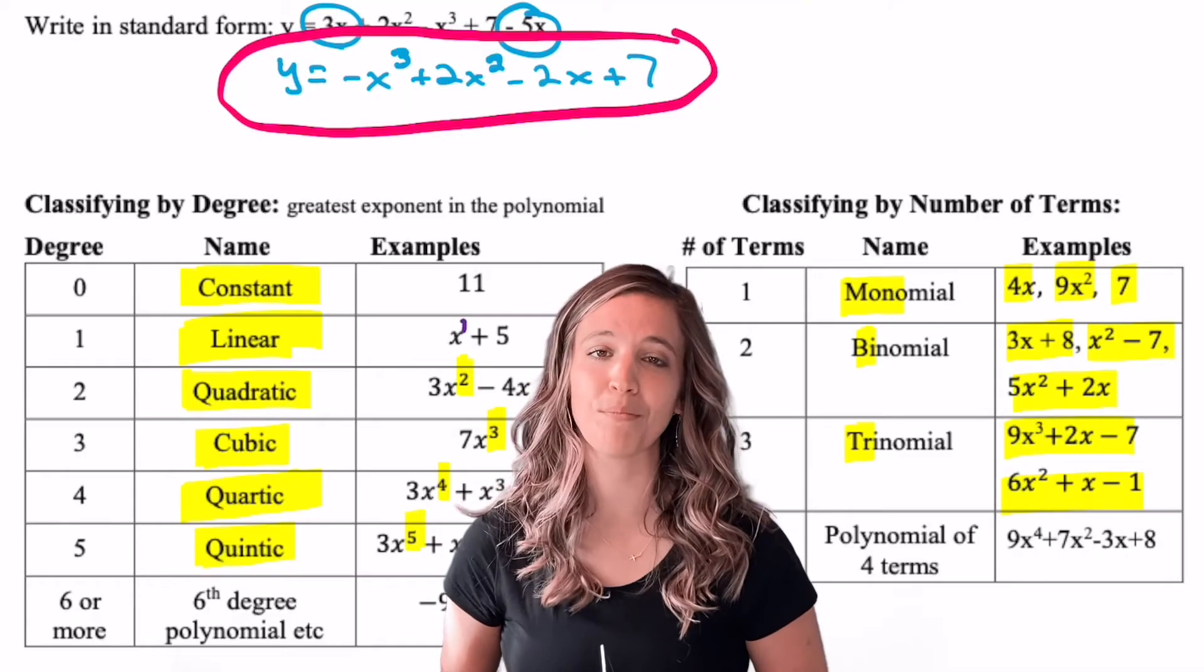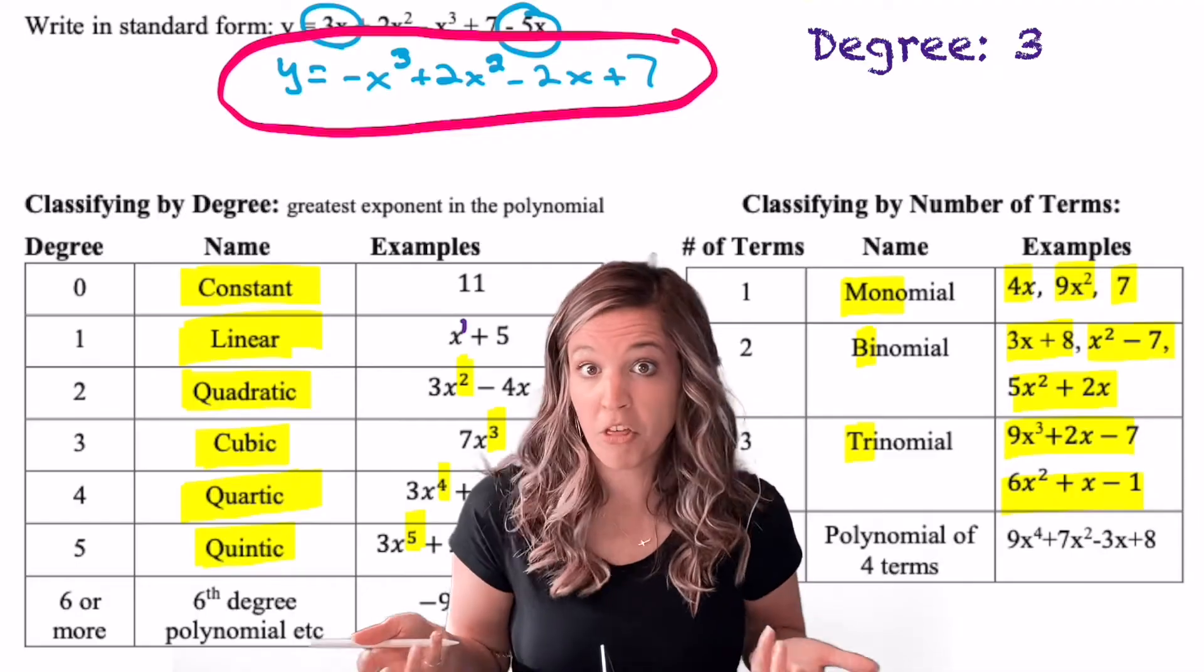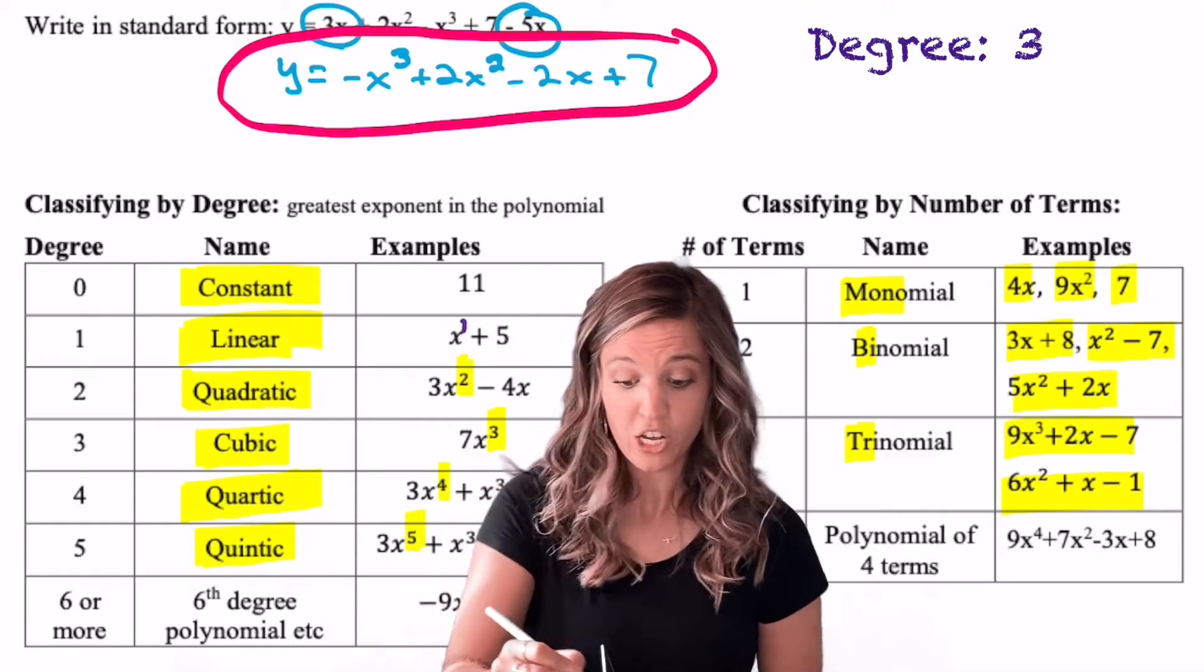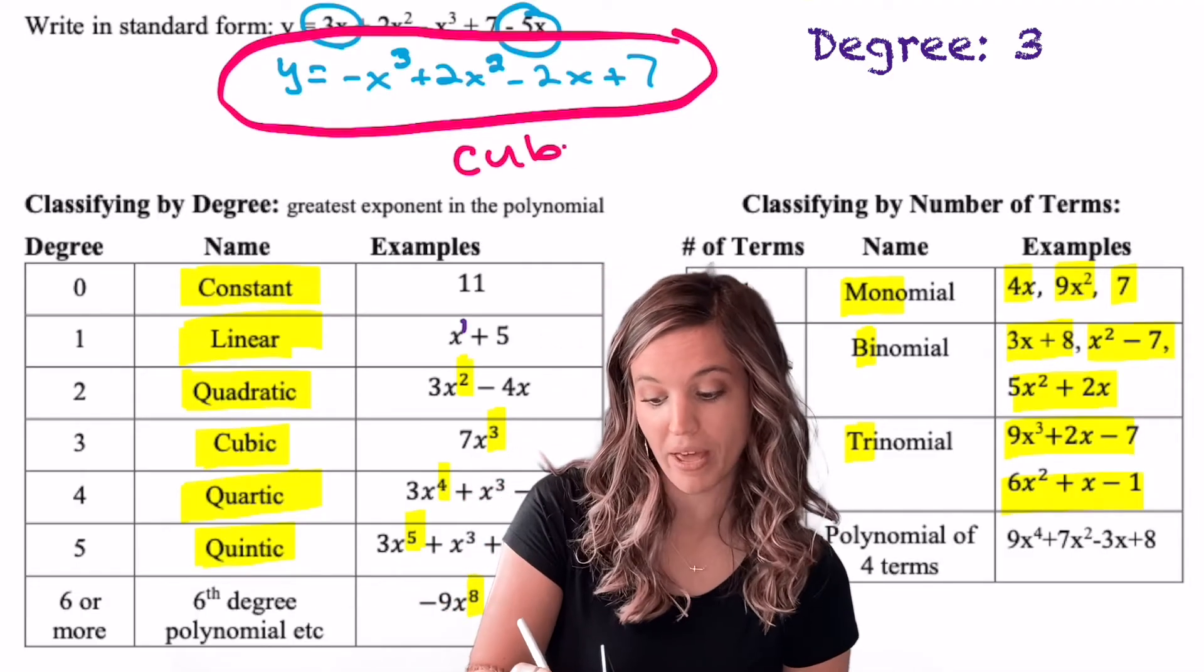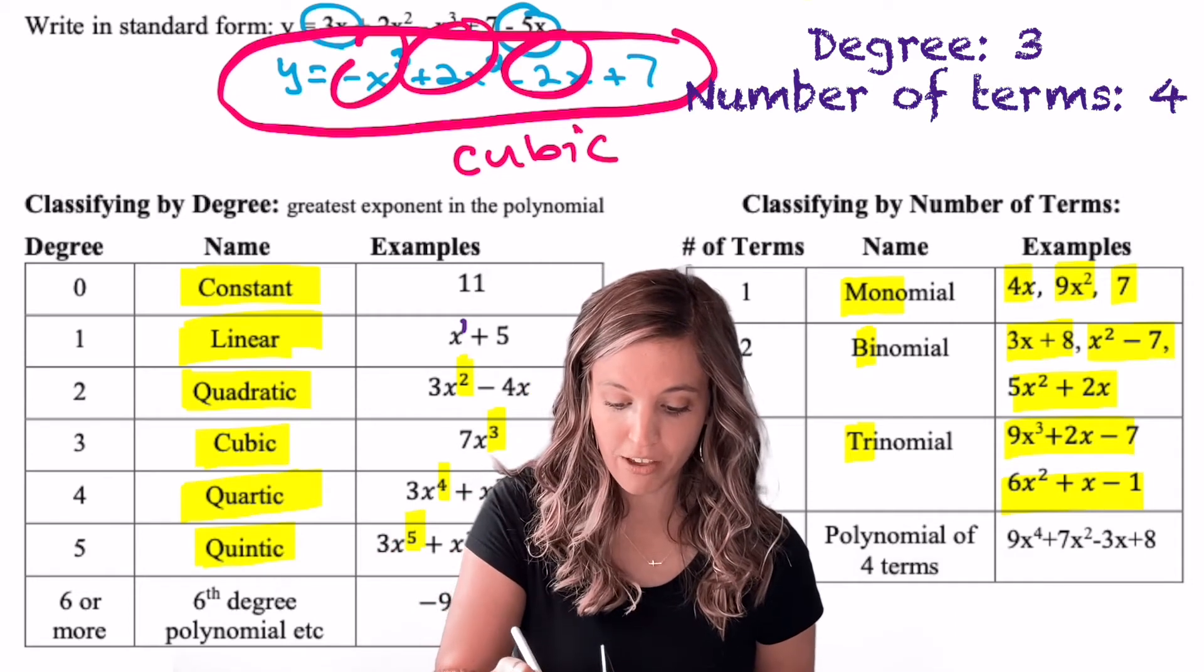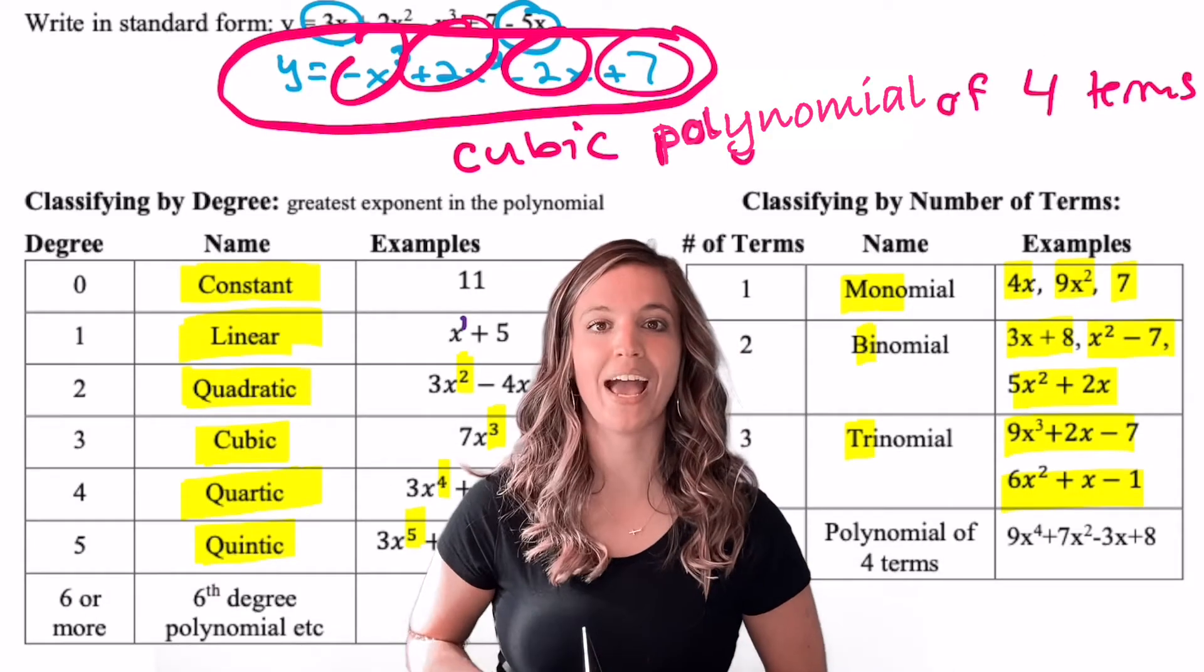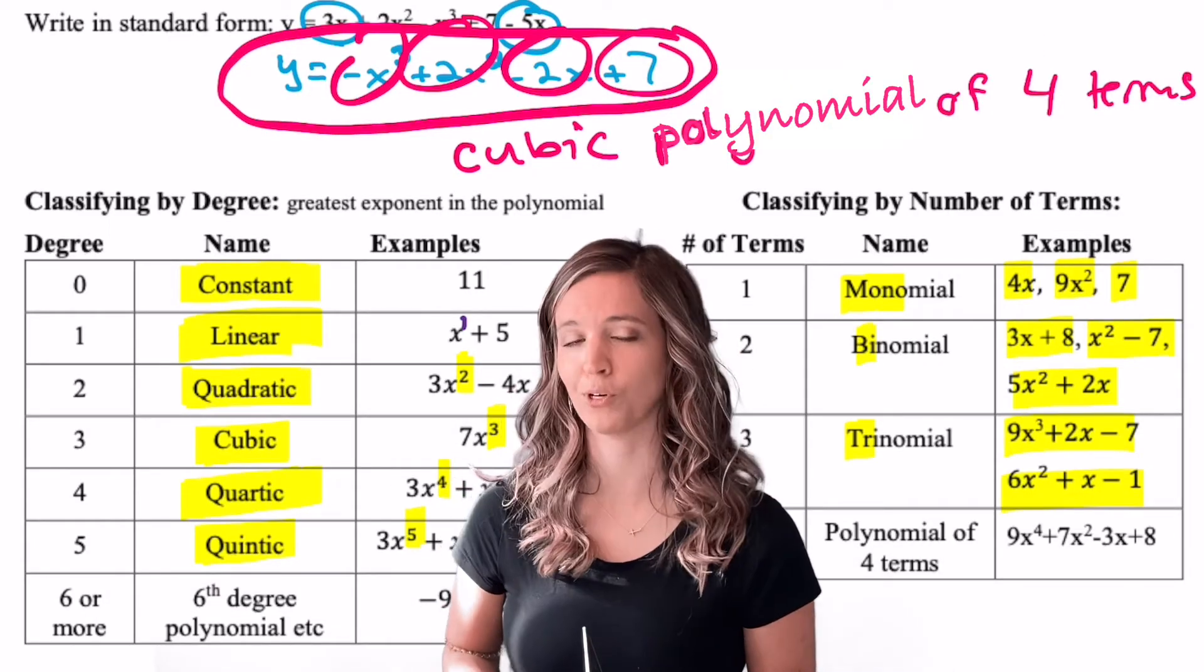Let's look at Mrs. Peart's example from before. She wrote a polynomial in standard form. What would the degree be? Three, because the highest exponent is three. So it's classified as a cubic. And then number of terms: one, two, three, four terms. That's a polynomial with four terms. So we have a cubic polynomial of four terms.